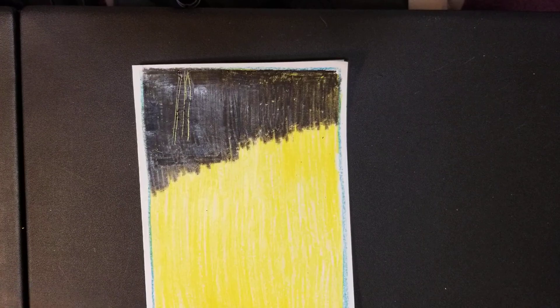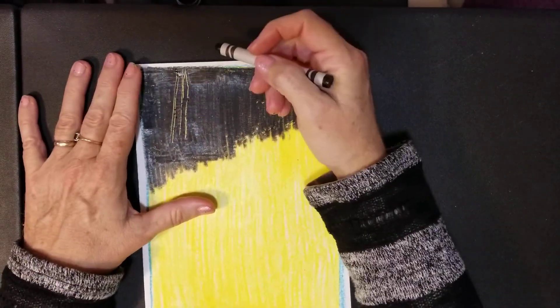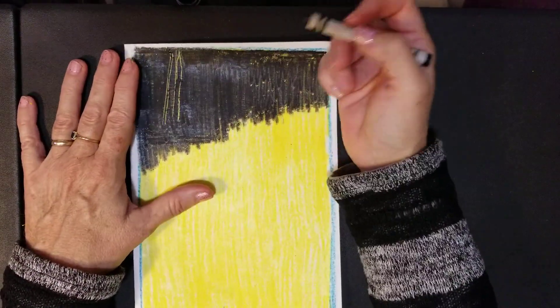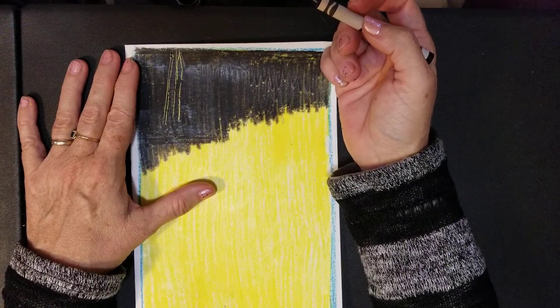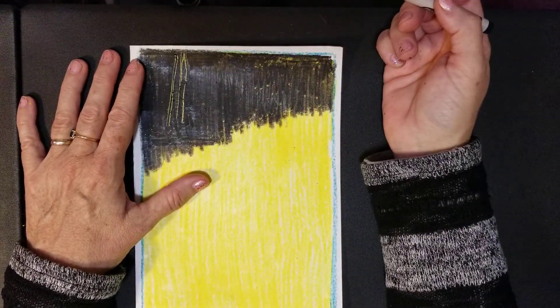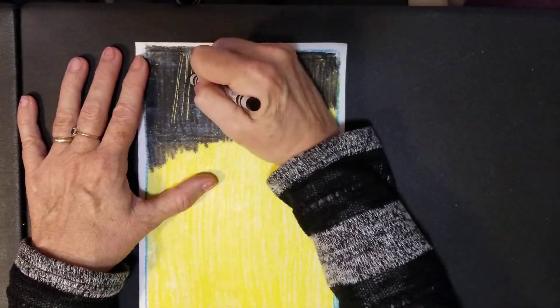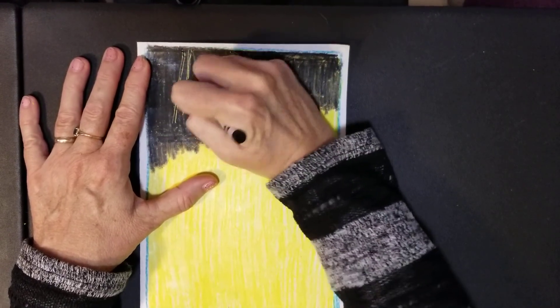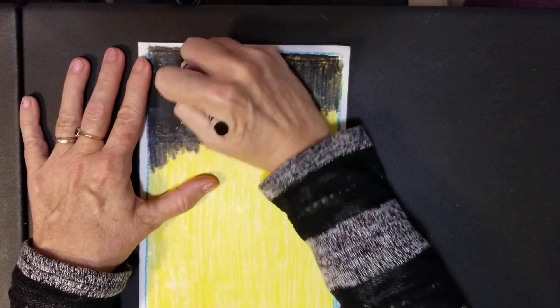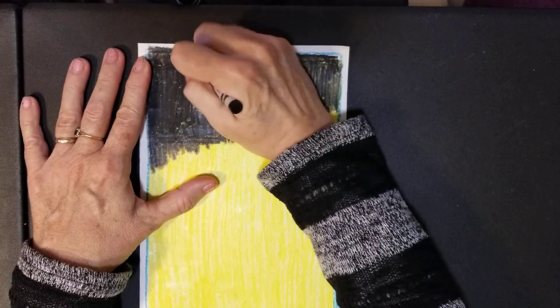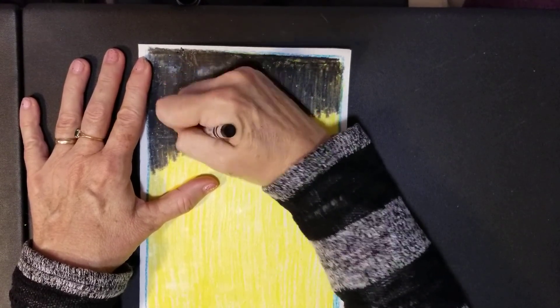One nice thing about this is if you make a mistake—you can't do this on the scratch paper I use in class—but with this, all you have to do is color back over it and it erases your mistakes.